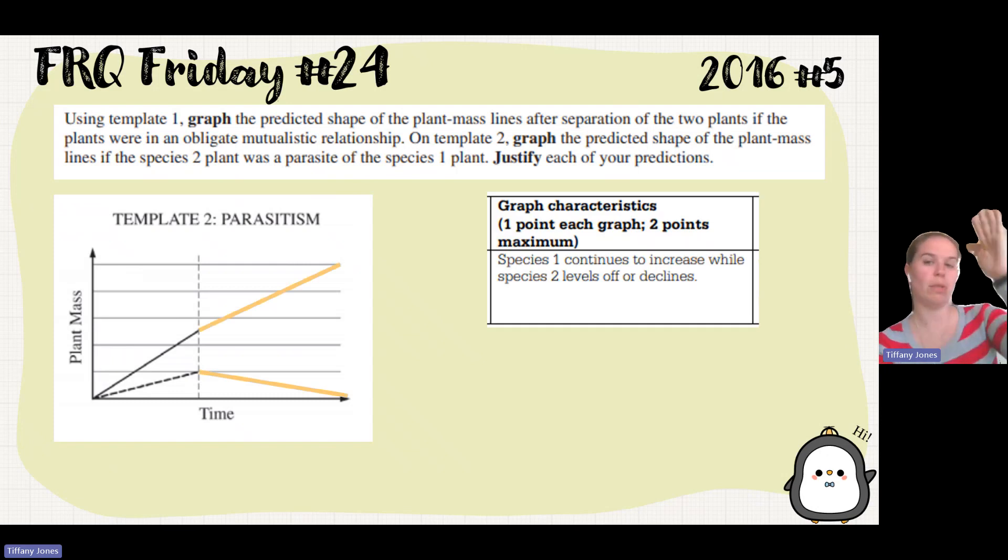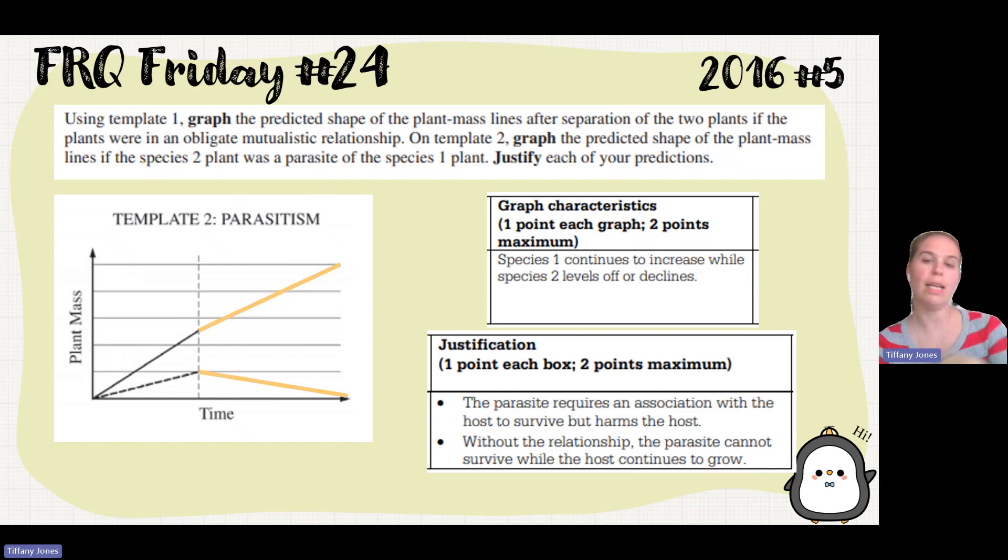So species 1 increases, species 2 levels off or declines. The parasite requires an association with the host to survive but harms the host. Without the relationship, the parasite cannot survive while the host continues to grow.